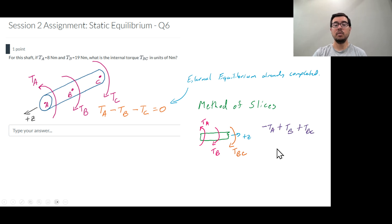Now we do the algebra. We have minus TA because that's in the minus direction relative to this plus Z. TB is in the positive direction and once again TBC is in the positive direction. We can rearrange to find TBC is equal to TA minus TB. When we substitute our parameters, 8 Nm and 19 Nm, we're going to get minus 11 Nm.